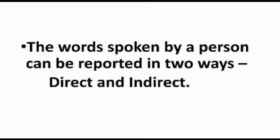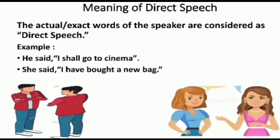किसी भी बात को कहने के दो तरीके होते हैं - direct and indirect. Direct speech का क्या meaning होता है? The actual or exact words of the speaker are considered as direct speech. Speaker के द्वारा बोले गए actual words को direct speech कहा जाता है - उन्हीं शब्दों को as it is बोल देना direct speech होता है। For example, he said, 'I shall go to cinema' - यह direct speech है।